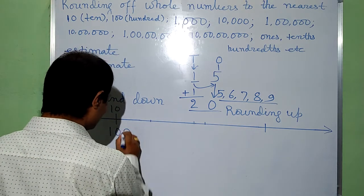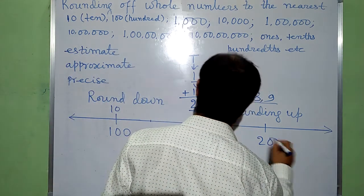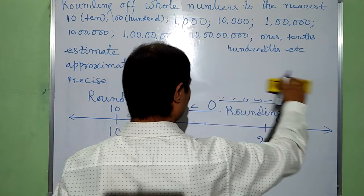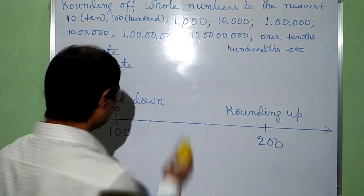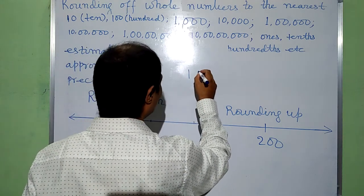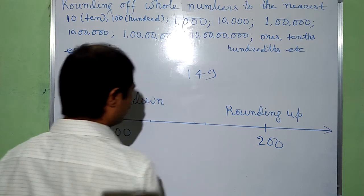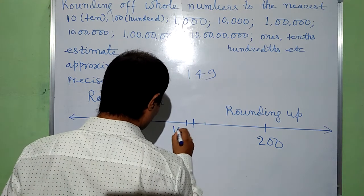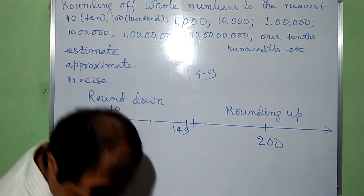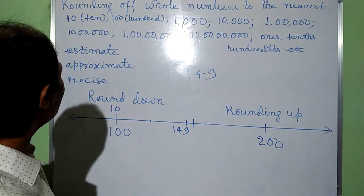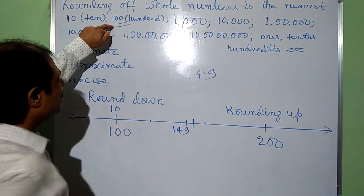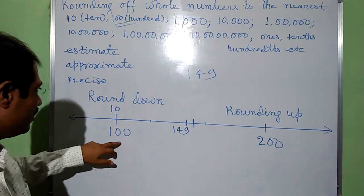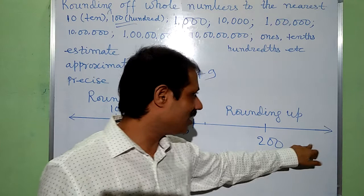Now, if we have 100 and 200 on the number line and we need to round 149 to the nearest 100 — that is, to the nearest multiple of 100. As we know, multiples of 100 are 100, 200, 300, 400, and so on.